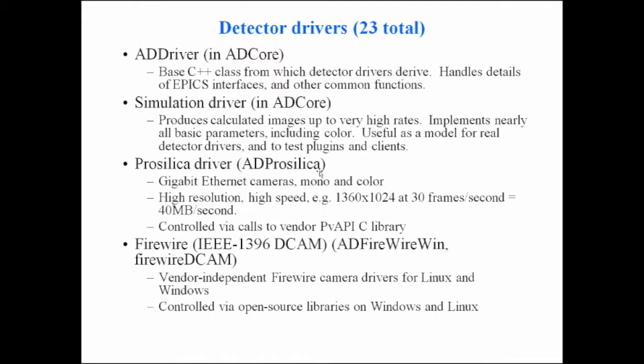The ProSilica driver was the first one written, for GigabitEthernet cameras — mono and color, high resolution, high speed. This is one I'll be using for the demonstration this afternoon. It's an example of controlling a detector by calling a vendor C library called the PVE API. There's also support for any vendor's Firewire cameras following the IEEE 1394 DCAM specification, with two separate drivers — one for Windows based on a Carnegie Mellon public domain driver, and one for Linux based on open-source DCAM libraries.